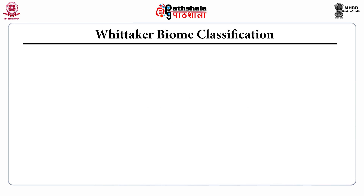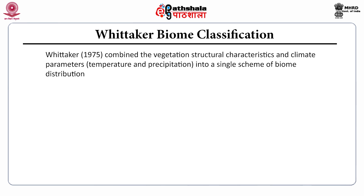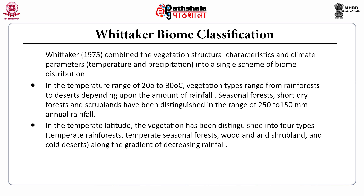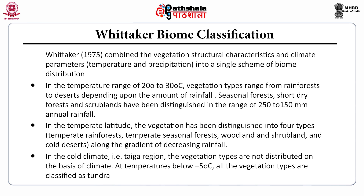Whittaker's biome classification was given in 1975. It combines vegetation structure and characteristics with climate parameters like temperature and precipitation into a single scheme of biome distribution. In the temperature range of 20 to 30 degrees, vegetation types range from rainforest to deserts depending upon the amount of rainfall. Seasonal forest, short dry forest and scrublands have been distinguished in the range of 250 to 150 mm annual rainfall. In temperate temperatures, vegetation has been distinguished into four types: temperate rain forest, temperate seasonal forest, woodland and shrublands, and cold deserts. Along the gradient of decreasing rainfall in the cold climate, that is the Taiga region, vegetation types are not distinguished on the basis of climate. At temperatures below minus 5 degrees, all vegetation types are classified as tundra.